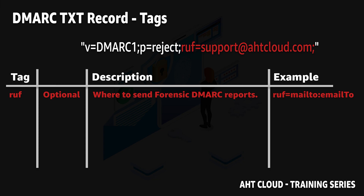The ruf tag is also an optional tag — it's like the rua tag but allows you to specify an email address or addresses to receive your DMARC forensic reports. I always recommend you have this tag set as well, even if your domain is not sending emails. The forensic reports are sent to you when someone attempts to send an email impersonating your domain and it fails your DMARC and DKIM authentication — it instructs the email service providers to send you a copy of that email.